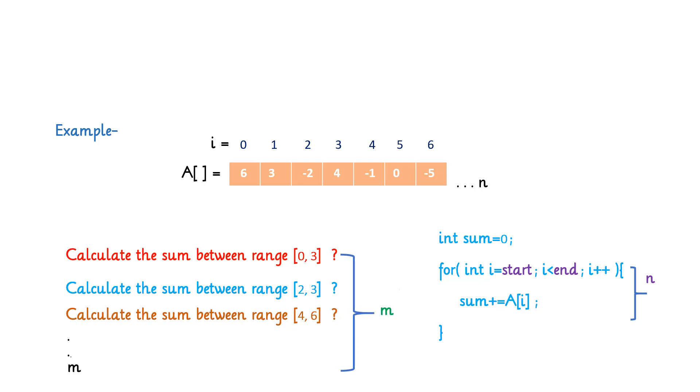But what if you have m number of queries? So you will have one more outer loop which will run from 1 to m. So the outer loop will execute m times and inner loop will execute n times in worst case. Then overall time complexity of this algorithm would be O(mn).